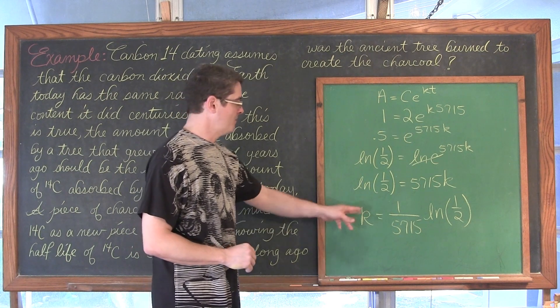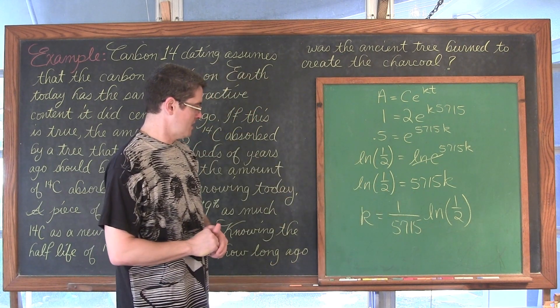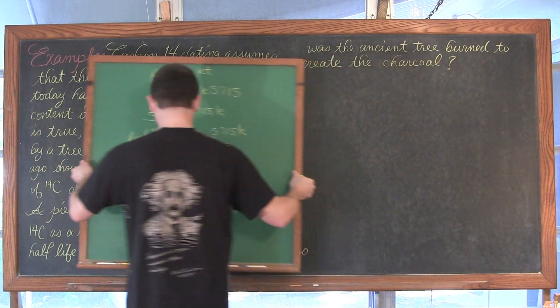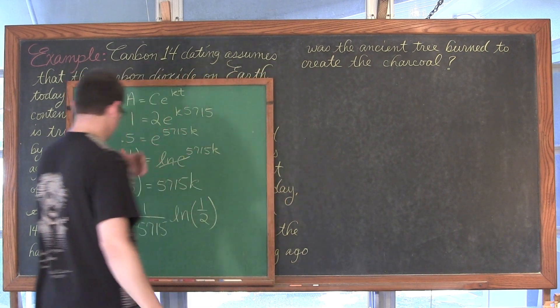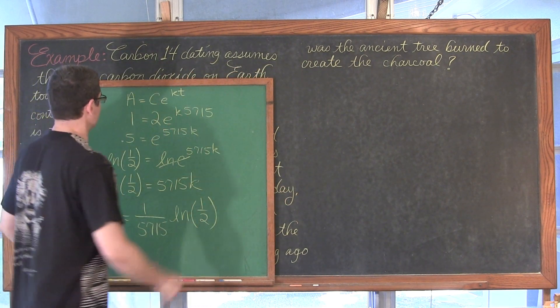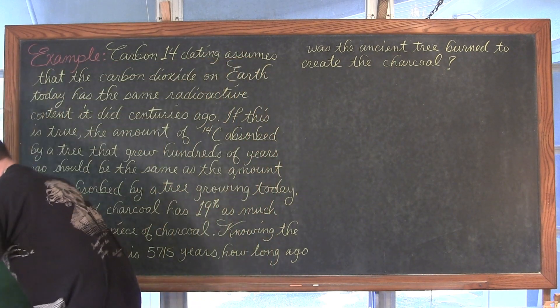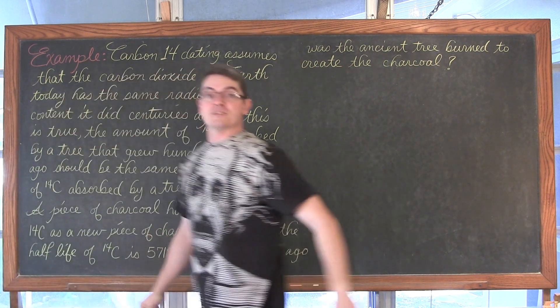I would caution you though, rounding off very much at all is going to cause your final answer to be off a lot. If you're going to make that a decimal approximation now, at least go out four or five decimals. But I'm going to leave it in exact format to minimize the roundoff error as much as possible. Let's get this down here. My advanced picture-in-picture.